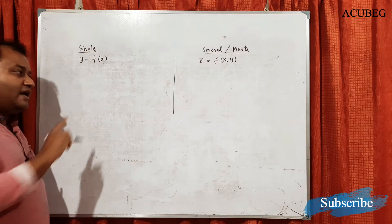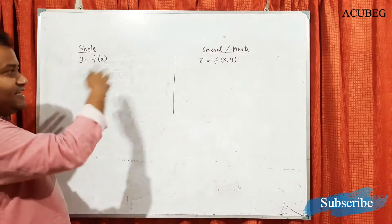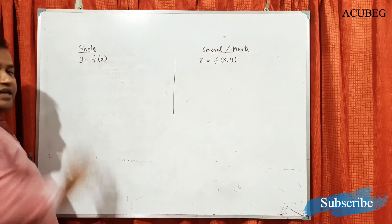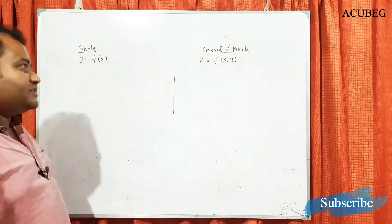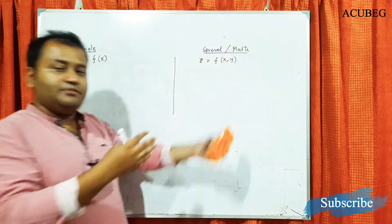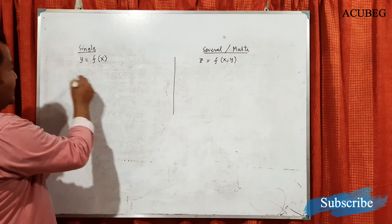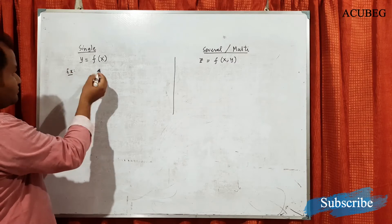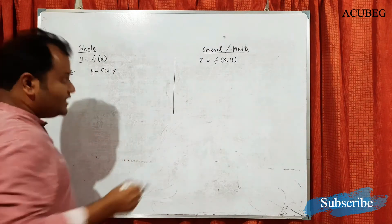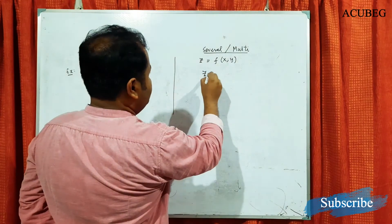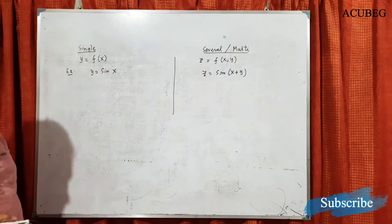The basic difference we can observe is that the single variable function consists of only one variable — the expression will be of x only. But a multivariable function consists of two variables x and y, so the expression should contain x and y, or has the capacity to contain both. For example, y = sin(x) is single variable, but z = sin(x + y) is multivariable.